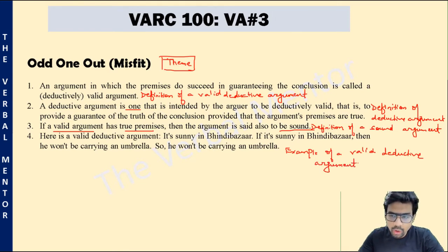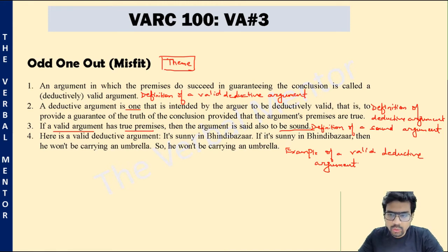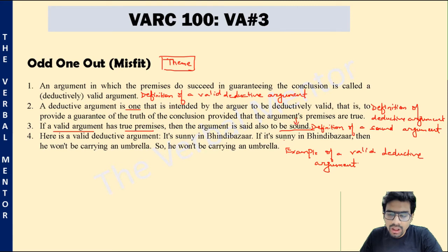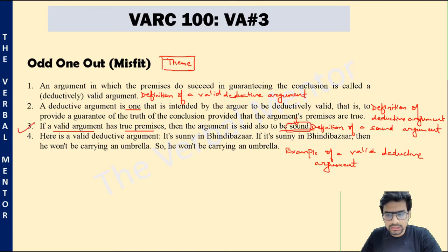Obviously, sentences one, two, and four form a context of discussion. Sentence two defines a deductive argument, sentence one tells you when a deductive argument is considered valid, and sentence four gives you an example of a valid deductive argument. They form a logical, coherent sequence. Sentence three is a different dimension of discussion — a new angle — about when any valid argument is considered sound. So this is a different discussion altogether, and sentence three is therefore the correct answer.